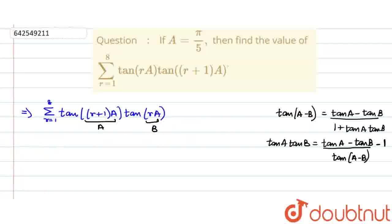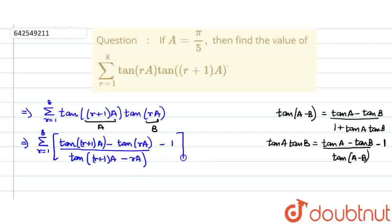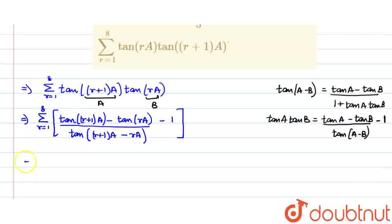The new values will come out to be: summation of r equals 1 to 8 of [tan((r+1)a) minus tan(ra)] in the numerator, and the denominator part will become tan((r+1)a − ra) minus 1. Now, I can take the −1 separately, so this will become −1 plus summation of r equals 1 to 8.